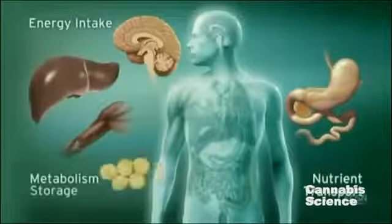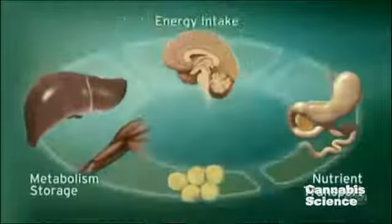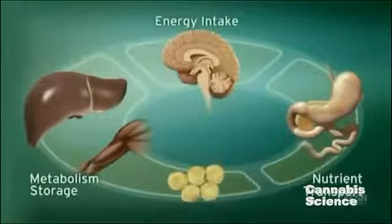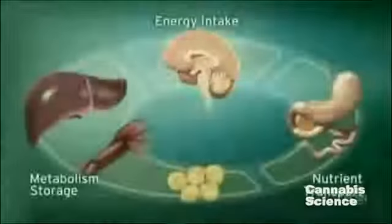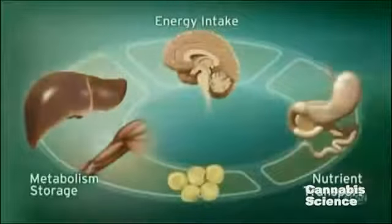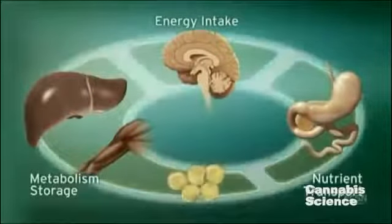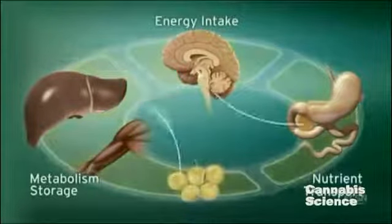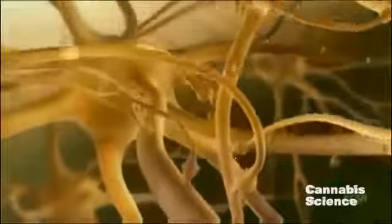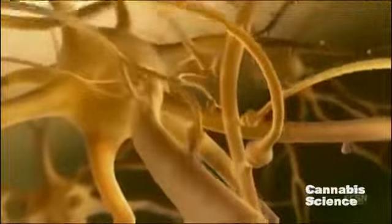The ECS regulates these processes through endogenous ligands such as anandamide and 2-arachidonyl glycerol, and the CB1 receptor. CB1 receptors are located in the brain, digestive tract, muscle, and adipose tissue. Integration of these central and peripheral ECS components is achieved through neuronal and hormonal signaling.